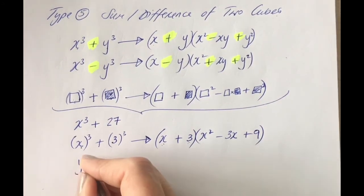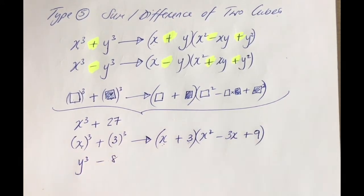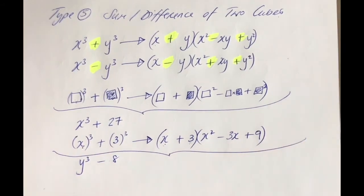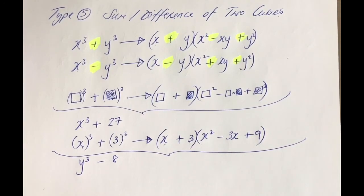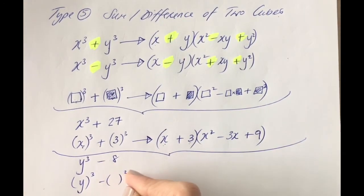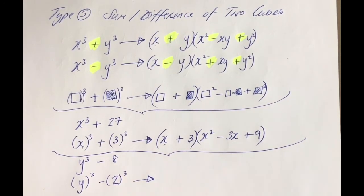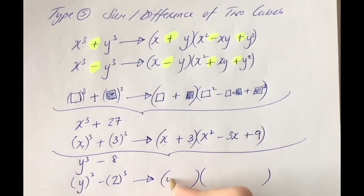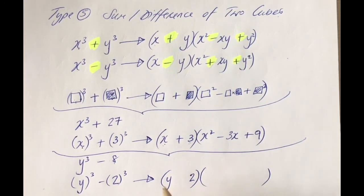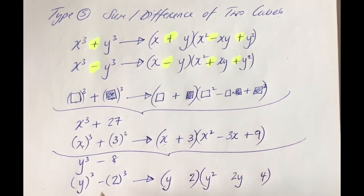Let's try y cubed minus 8. Pause the video if you like and go ahead and try this one on your own. What's being cubed to get y cubed is just y, and to get 8, what's being cubed is 2 — 2 is the number that's cubed to get 8. So open up the brackets: y is what's being cubed to get the first term, 2 is what's being cubed to get the second term. Square y to get y squared, square 2 to get 4, multiply the two together to get 2y, and the signs with the difference go minus, plus, plus.